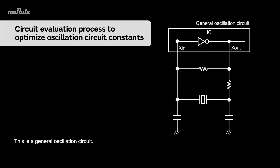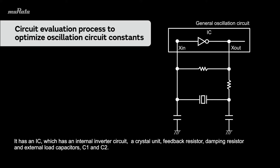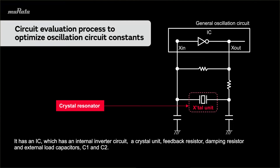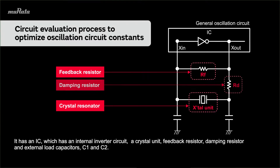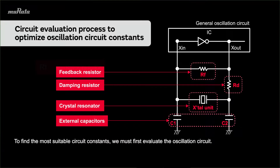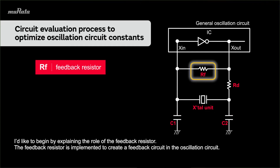This is a general oscillation circuit. It has an IC, which has an internal inverter circuit, a crystal unit, feedback resistor, damping resistor, and external load capacitors C1 and C2. To find the most suitable circuit constants, we must first evaluate the oscillation circuit.